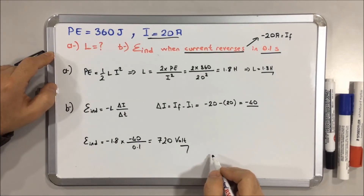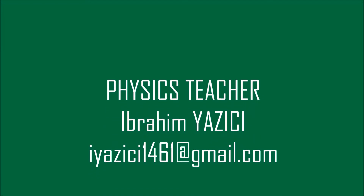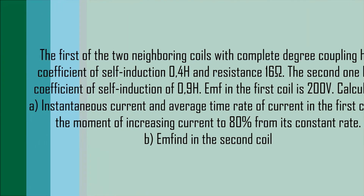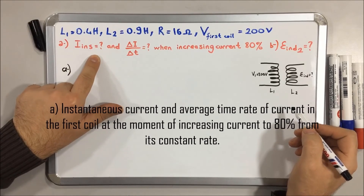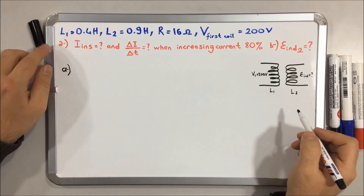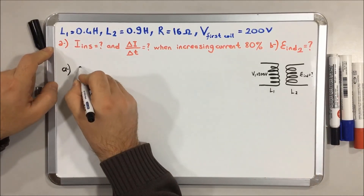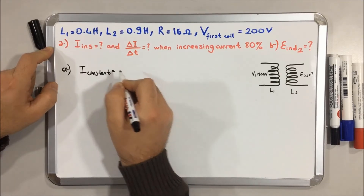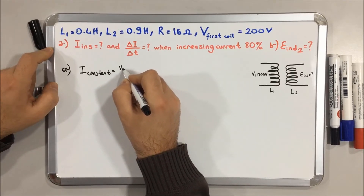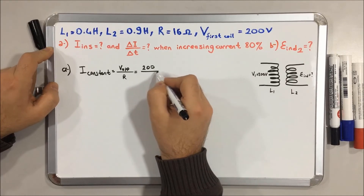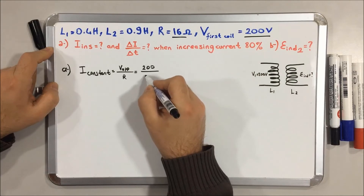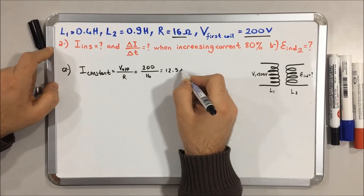Thanks for listening. Hello, welcome everyone. The question says calculate the instantaneous current and the delta I over delta t. To find the instantaneous current, we first calculate the steady-state constant current: I constant equals V applied over R, which is 200 over 16, giving 12.5 A.